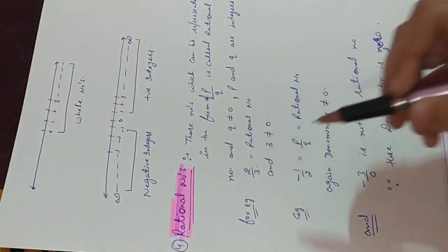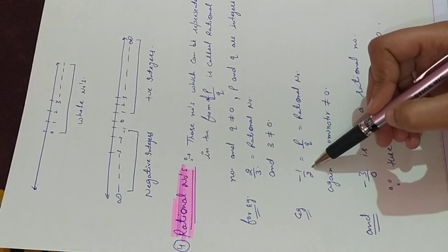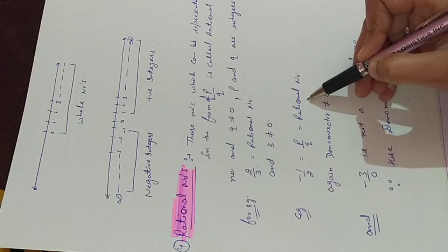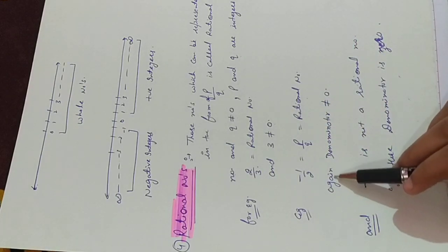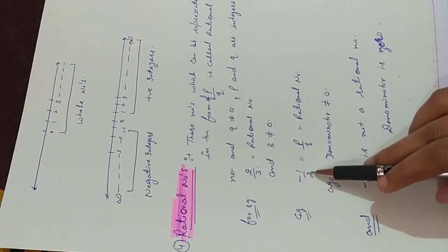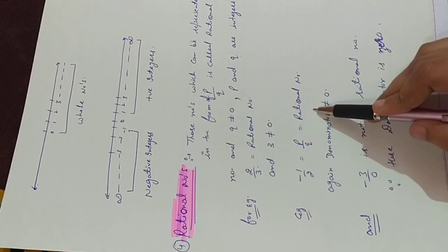Now, we will take one more example: minus 1 by 2. It is also equals to P upon Q, that is rational number. Now, again denominator not equals to 0. Here 2 not equals to 0. Then this is also a rational number.